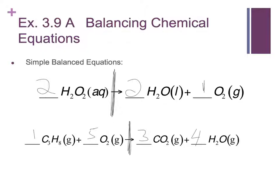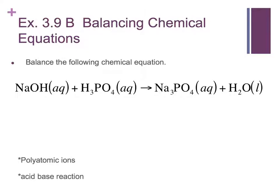So just go back and forth — guess and check is really the only way to do these. Balance the following chemical equations. Now there are two ways to do this one. You'll notice here that there is a polyatomic ion — I'm going to underline that in blue. It's phosphate, and it's on both sides of the balanced equation. Do not break that apart into phosphorus and oxygen. If it's on both sides, keep it together as phosphate.